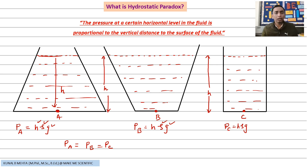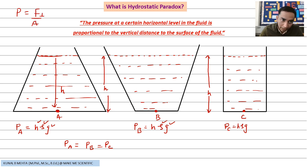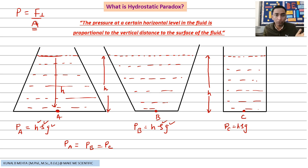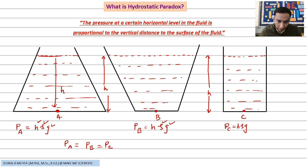Most students have a confusion here: if I apply P = F⊥/A, the area of the bottom is different for each vessel, which seems to mean the pressure exerted by the liquids at the bottom should be different. So what is the paradox? Let me explain it using vector resolution.